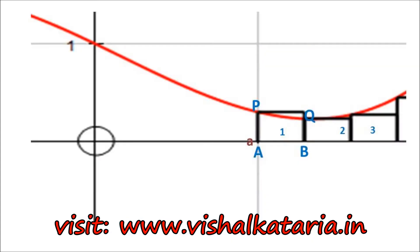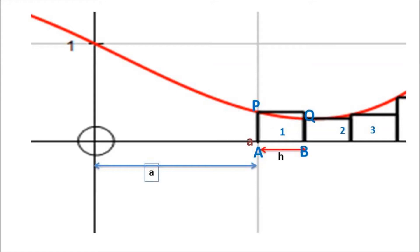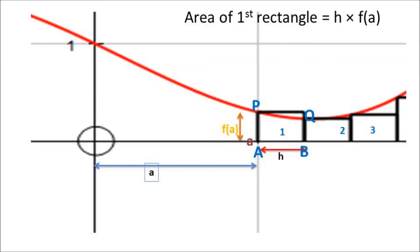Our next step is to find the area of each rectangle so that we can add these areas and find the total area under the curve, which is nothing but the definite integral from a to b of f(x) dx. For the first rectangle, the distance of point a from the y-axis is equal to a, and the width of each rectangle is h. The y-coordinate of point b gives the height of the first rectangle, and that y-coordinate is f(a), since the x-coordinate of point b is a. So the dimensions of the first rectangle are: width = h and height = f(a), giving an area of h × f(a).